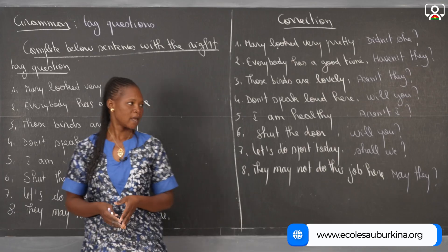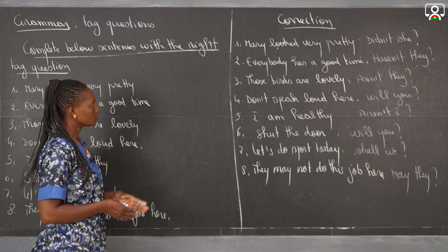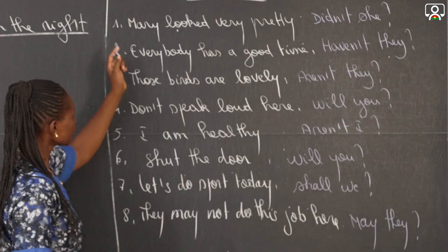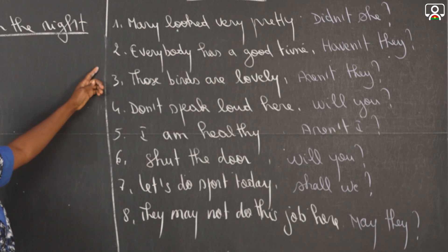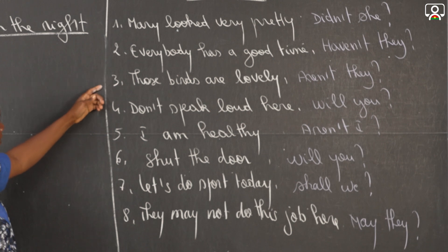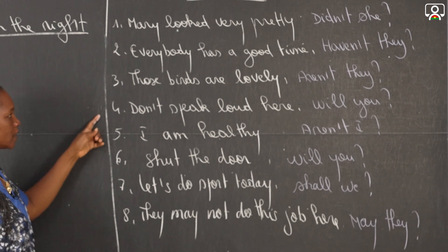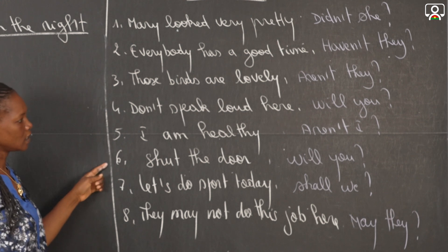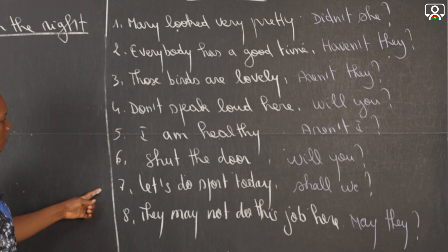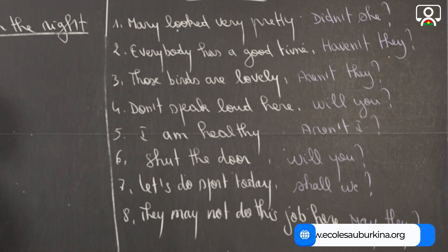This is the end of the correction of the exercise on the question tag. I'm going to read again the sentences for you. One: Mary looked very pretty — didn't she? Two: everybody has a good time — haven't they? Three: those birds are lovely — aren't they? Four: don't speak loud here — will you? Five: I'm healthy — aren't I? Six: shut the door — will you? Seven: let's do sport today — shall we? And the last one: they may not do this job here — may they?